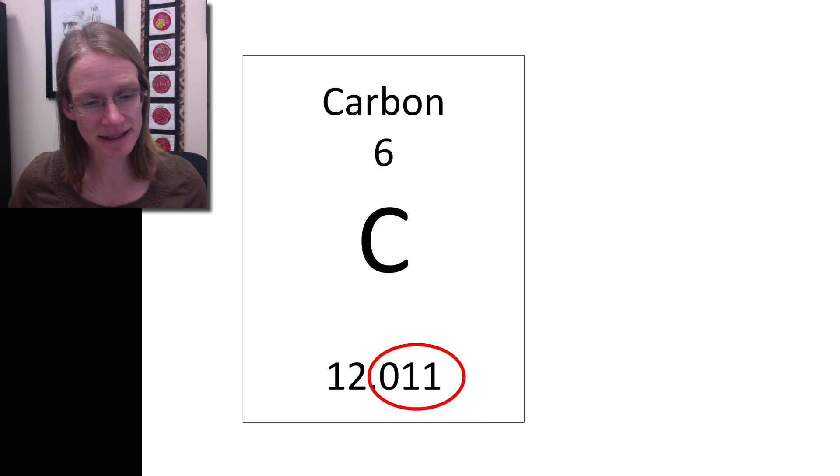Let's go back to what we saw in the periodic table. We've mentioned that we had six protons, six electrons, six neutrons, but if we actually looked at that atomic weight, it was not exactly 12—it was 12.011. The question is why is it 12.011?